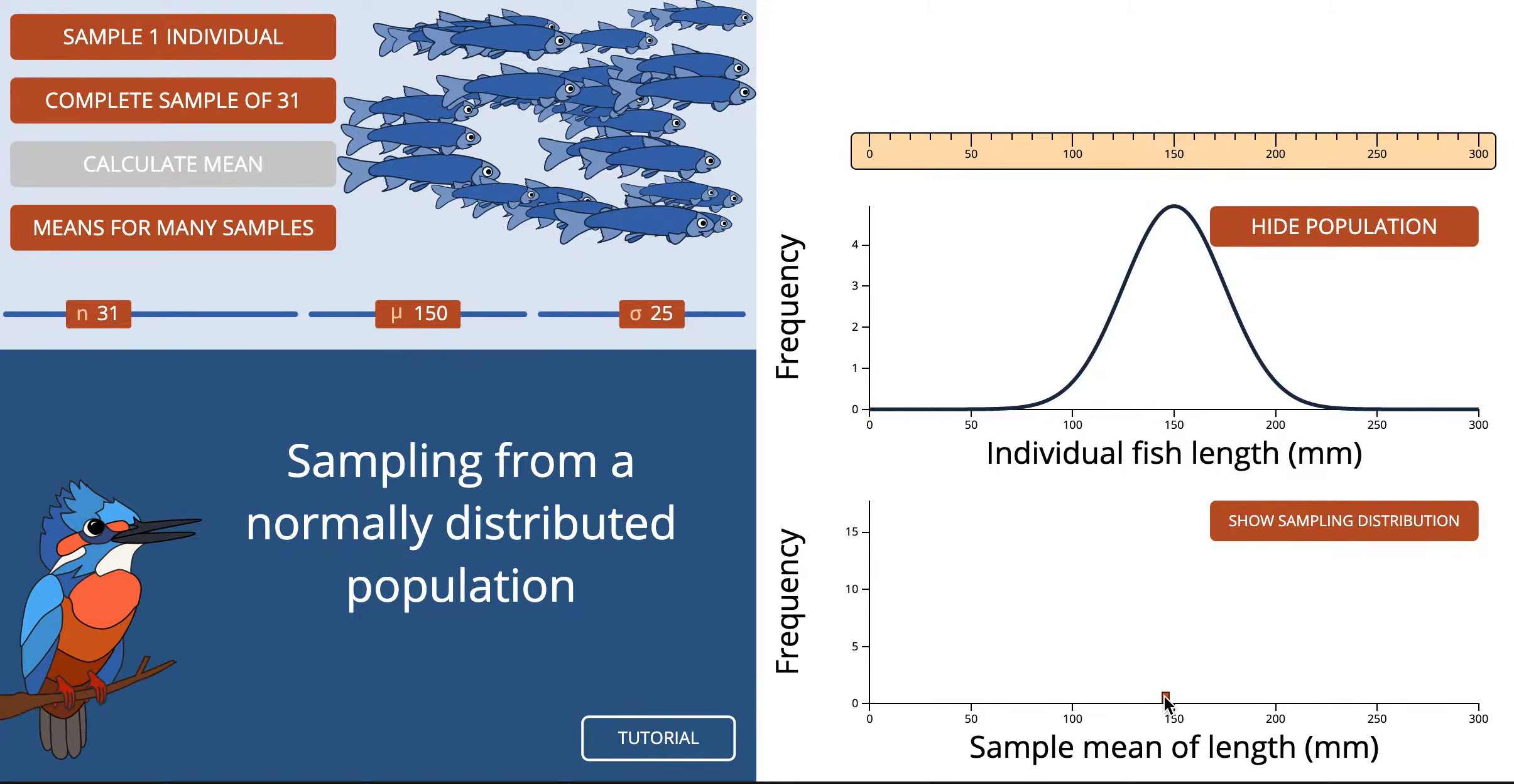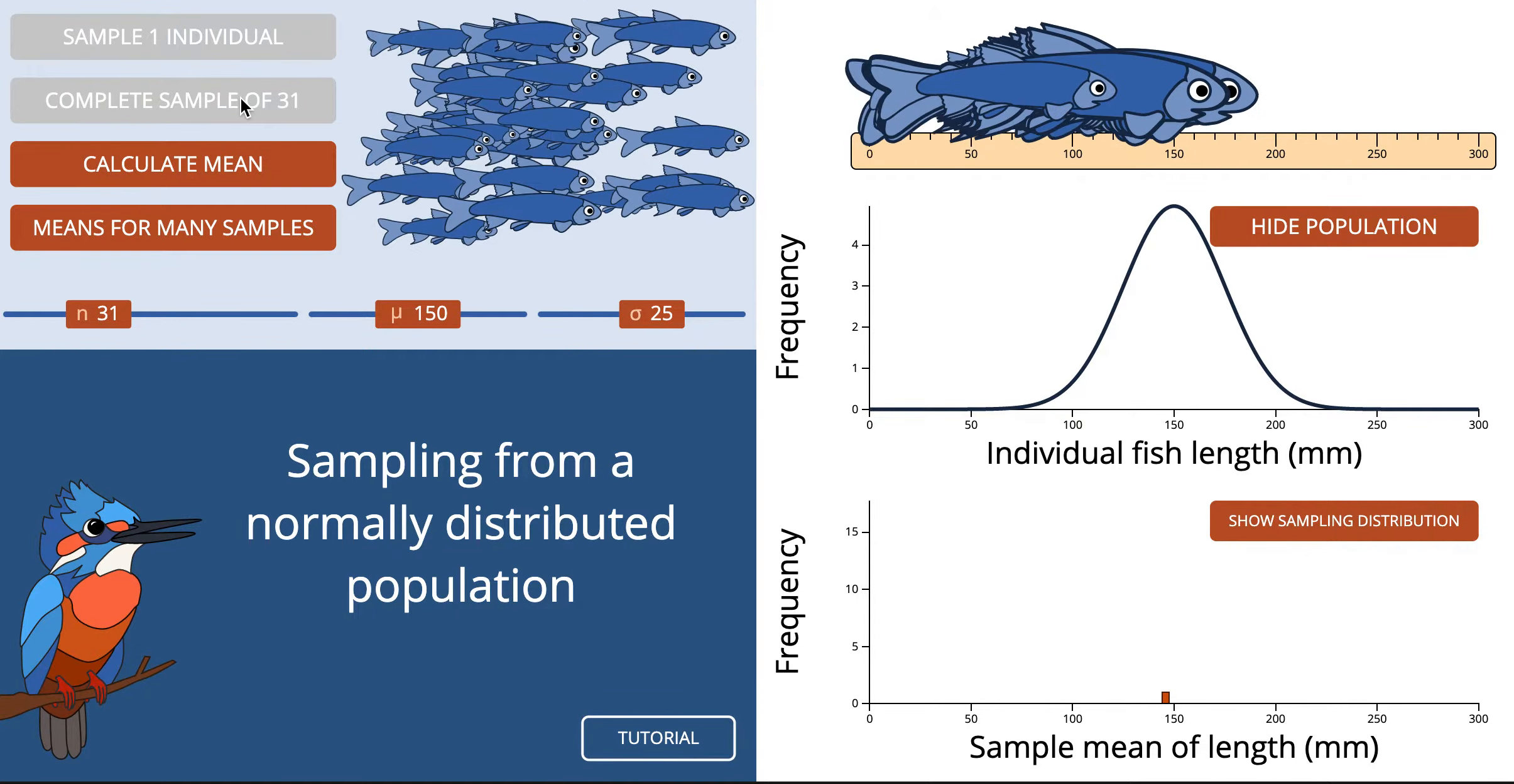So what we're seeing here is that when we take a sample of a certain size, this one is 31, and work out not the individual heights of every single fish, but the overall mean of all 31, the overall average, the mean of the sample is very close to the mean of the actual population of fish.